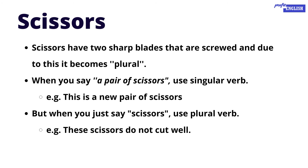The next word is 'scissors.' It is quite similar to tongs because it has two sharp blades. Whether talking about one or more than one, we always say 'scissors' and use a plural verb. However, when we say 'a pair of scissors,' we use a singular verb. Examples: 'This is a new pair of scissors.' 'These scissors don't cut well.'